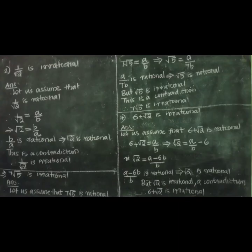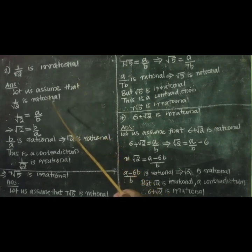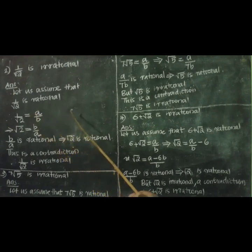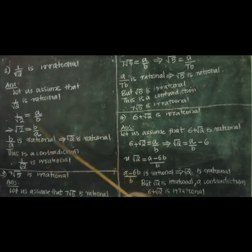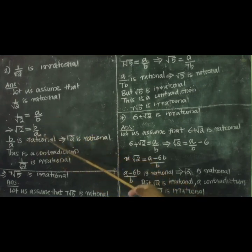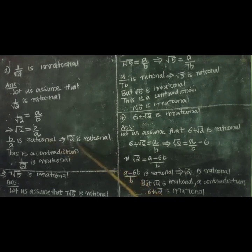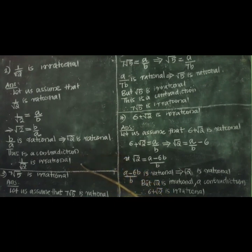Next question: prove that 1 by root 2 is irrational. Let us assume that 1 by root 2 is rational. Therefore, 1 by root 2 equal to a by b, where a and b are coprime and b not equal to 0. Taking the reciprocal, we get root 2 equal to b by a. Since a by b is a rational number, b by a is also a rational number. This implies root 2 is rational — but this is a contradiction because we know root 2 is irrational. Therefore, 1 by root 2 is irrational.